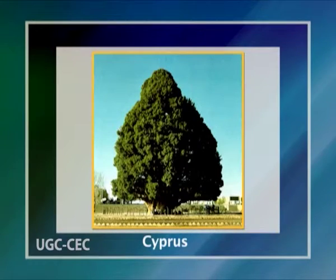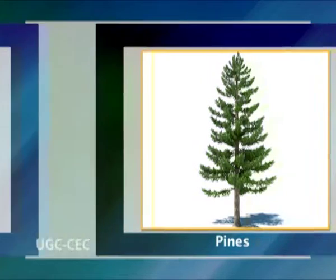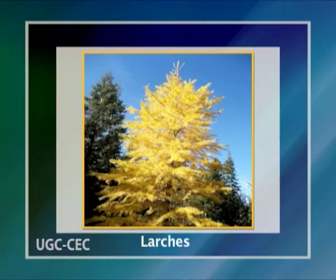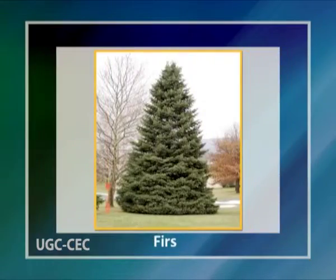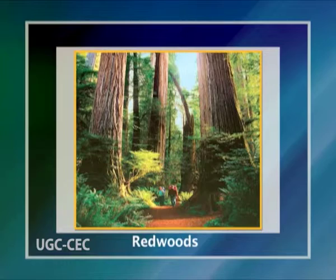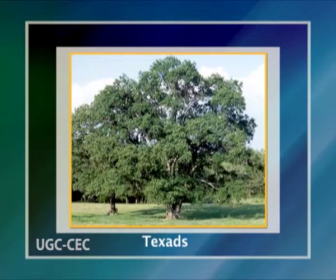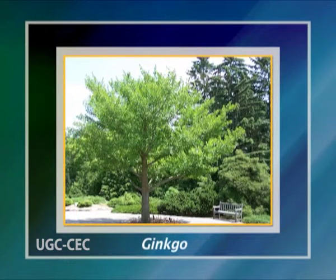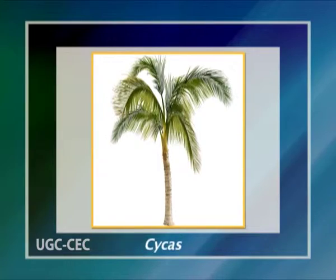Amongst gymnosperms, more than 600 tree species occur in three families: Cupressaceae, which mainly includes cypress and junipers; Pinaceae, which includes pines, spruces, larches, hemlocks, firs, and cedars; and Taxodiaceae, also called redwoods. Taxus with about 20 species and Ginkgo with just one species — Ginkgo biloba — and cycads, palm-like trees, and horsetails with a few interesting woody plants are other gymnosperms which exemplify the tree habit.